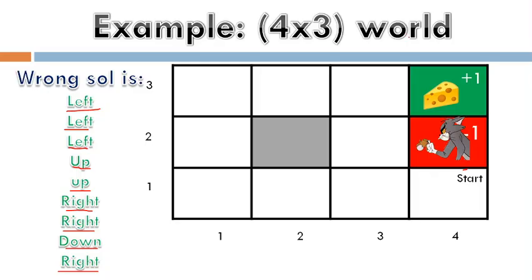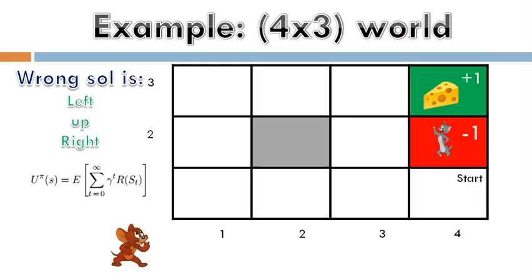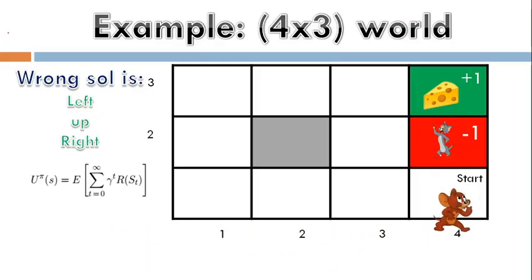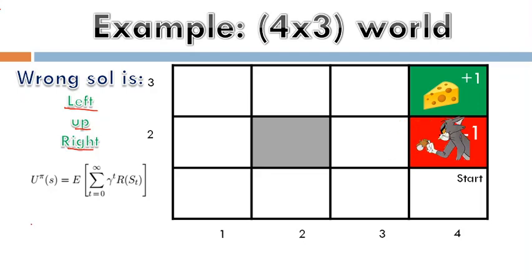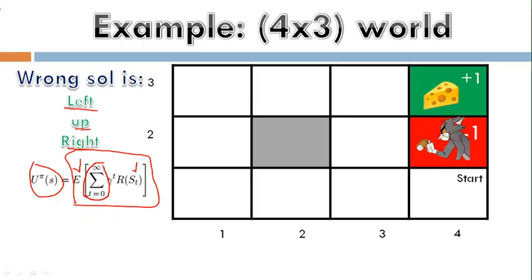Here is another wrong solution from the starting point: take left, take up, take right — that is another wrong solution. The utility function U to the power pi of s is the formula used here. We are estimating the state based on the actions applied and how many actions are applied over time.